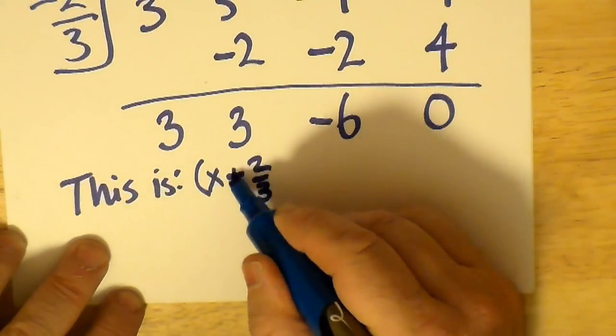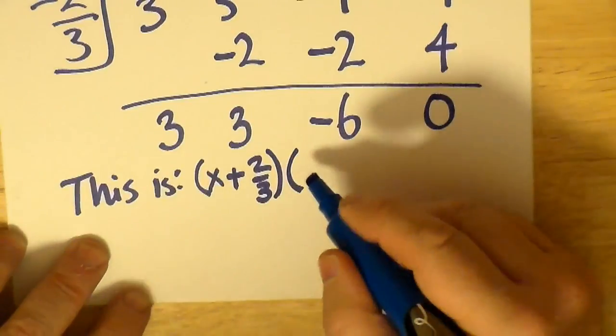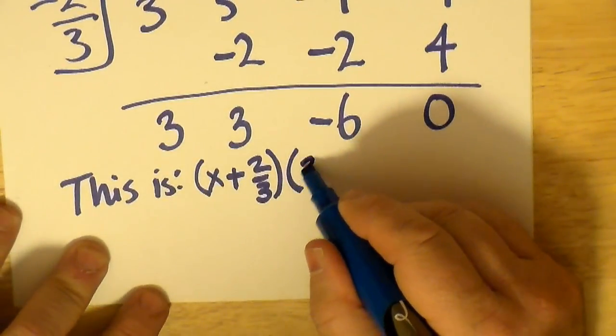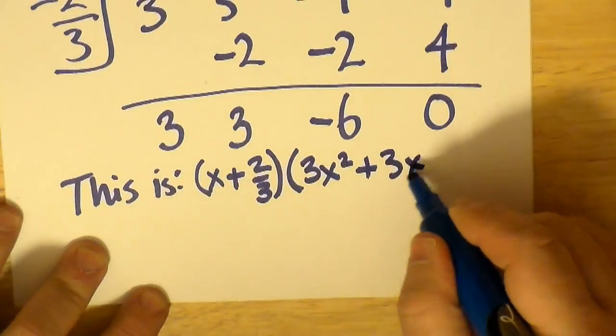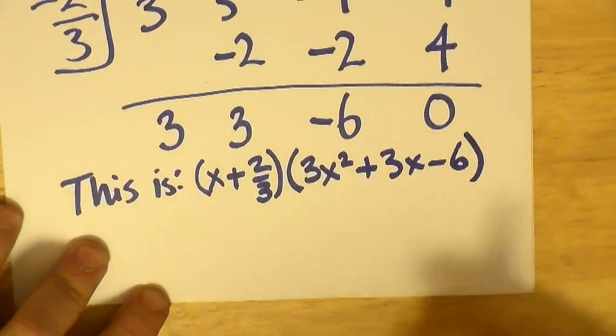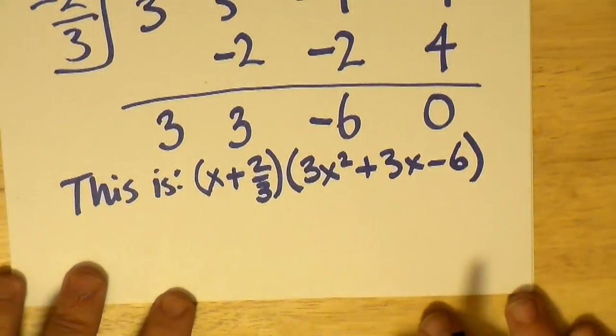But this is like saying x minus 2/3—or sorry, x plus 2/3, that is to say—times 3x² plus 3x minus 6.